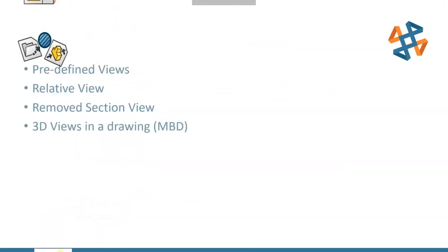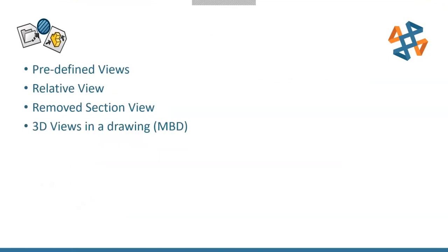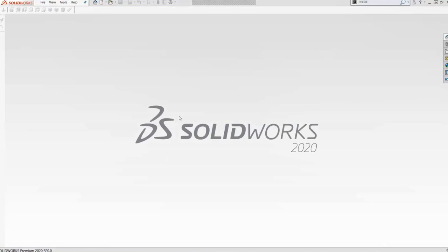Now let's talk about some different view options beyond the standard views. We'll look at predefined views — a standardized setup we can reuse — a relative view for creating custom view orientations, the removed section view added around 2019, and 3D views for those utilizing SOLIDWORKS MBD or DimXpert to add PMI information into a drawing.